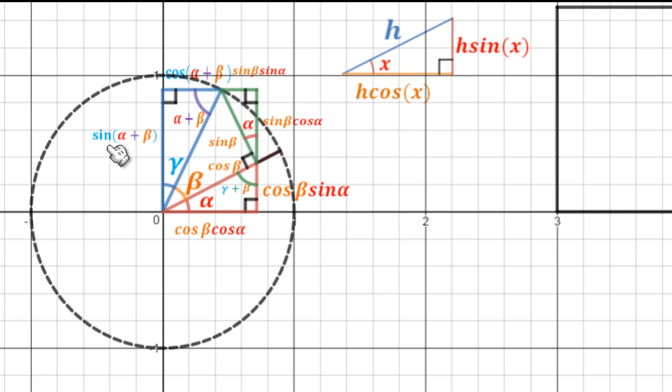So sine alpha plus beta is equal to sine beta cos alpha plus cos beta sin alpha because blue is green plus red. And cos alpha plus beta is just this red minus green. So cos alpha plus beta is cos beta cos alpha minus sin beta sin alpha.